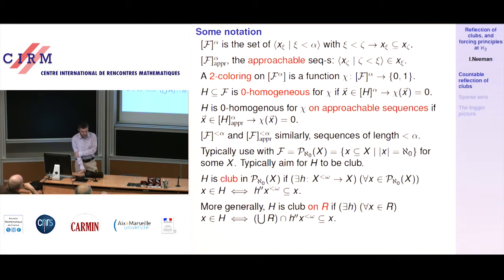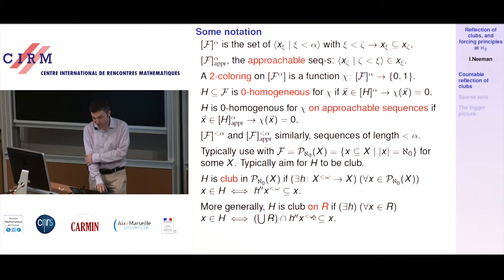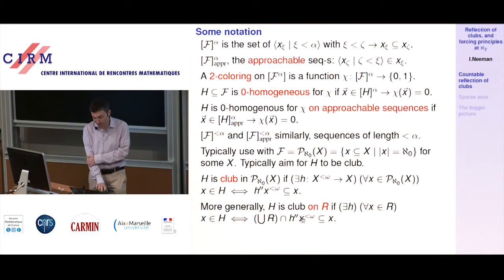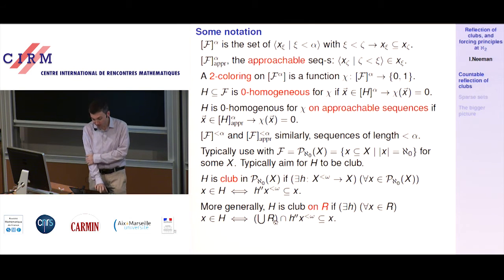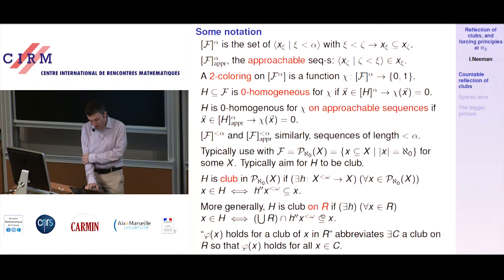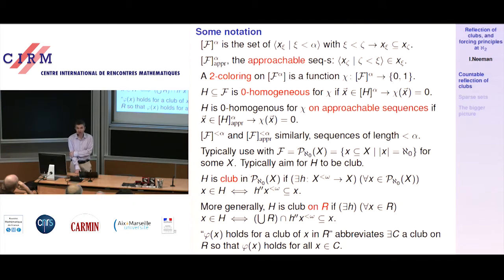More generally, H is club on R if the same thing holds modulo the fact that X has to belong to R. There exists little h so that for every X in R, X is in H if and only if it's closed under h to the extent possible — the image under h of tuples from X that stay inside the union of R must land in X. Then phi(X) holds for a club of X in R means there exists a club on R so that phi(X) holds for all X in that club.